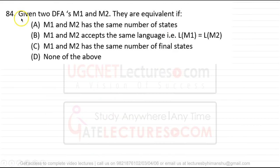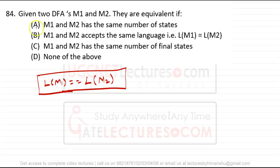Question 84: given two DFAs M1 and M2, how do we determine if they are equivalent? Two DFAs are equivalent only if the language accepted by M1 equals the language accepted by M2. Having the same number of states or same number of final states is not sufficient. For every language there is a unique minimized DFA. So B is correct: if M1 and M2 accept the same language, they are equivalent.